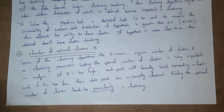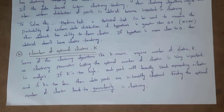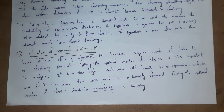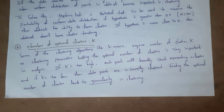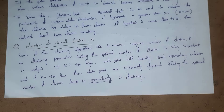The next factor is number of optimal clusters, denoted by K. For example, algorithms like K-means require K number of clusters as a clustering parameter. So getting the optimal number of clusters is very important in analysis. If the value of K is too high, then each point will broadly start representing a cluster. And if the K value is too low, then data points are incorrectly clustered. So finding the optimal number of clusters leads to guaranteed good clustering.